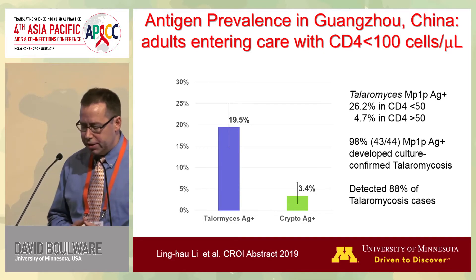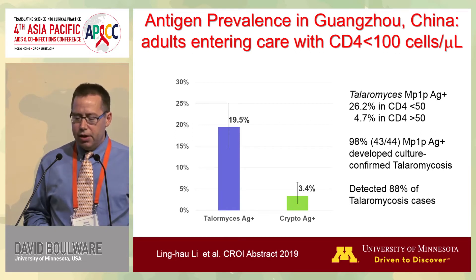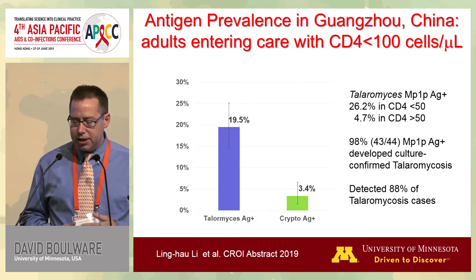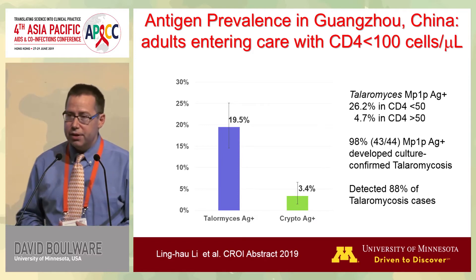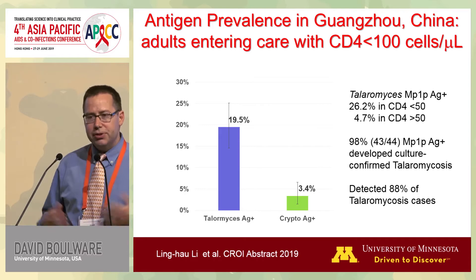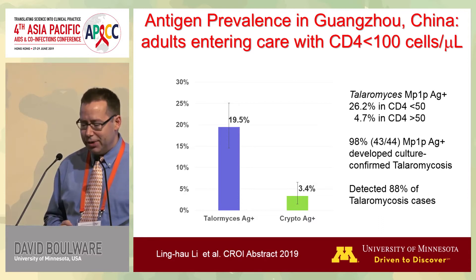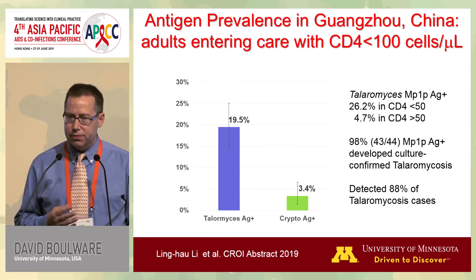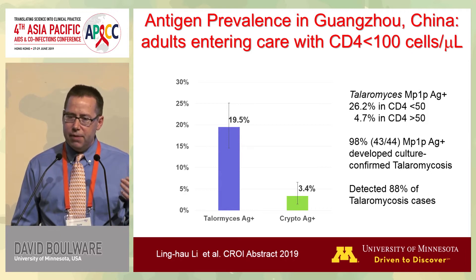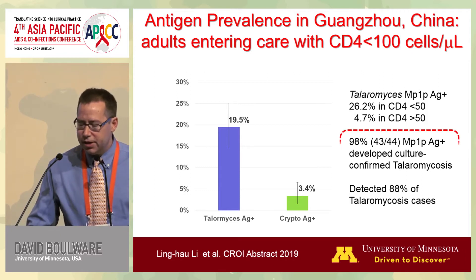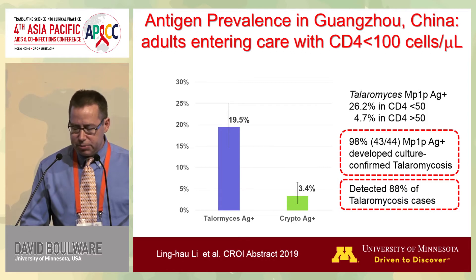A study from Guangzhou presented at CROI this year in Seattle looked at adults entering care, mostly in a hospitalized setting. Almost 20% of patients presenting had Talaromyces antigen — much higher than cryptococcal antigen prevalence rates — and particularly in people with CD4 counts less than 50, up to one in four patients had detectable Talaromyces antigen. The majority — 43 or 44 — had culture-confirmed Talaromycosis. This study detected almost all antigen-positive cases, certainly suggesting this is a potential screening test.